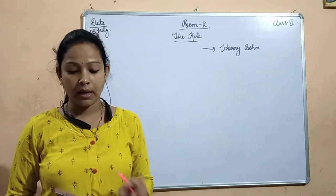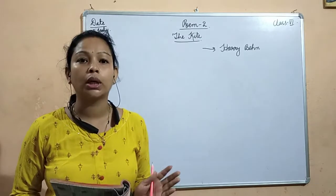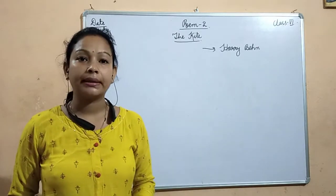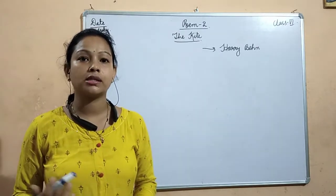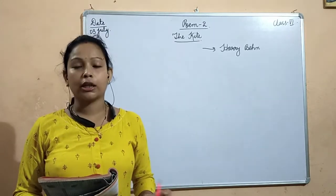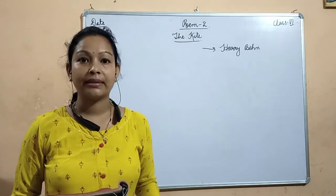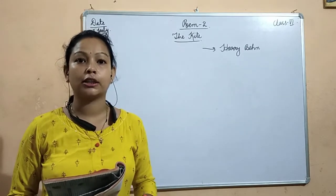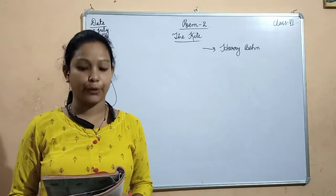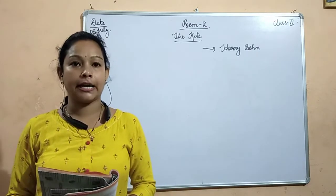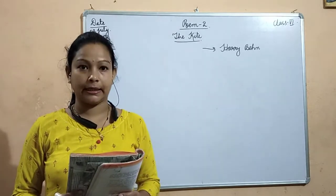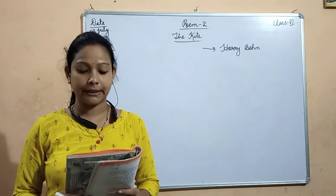Here, the colour blue refers to the clear blue sky — when there is no cloud in the sky. The poet says a kite looks very new and bright when the sky is clear and blue. The kite looks bright and beautiful. It takes a dive, goes up and down, and swiftly moves its tail.